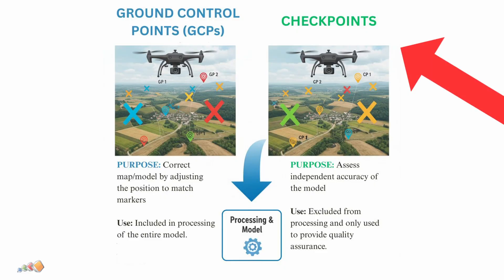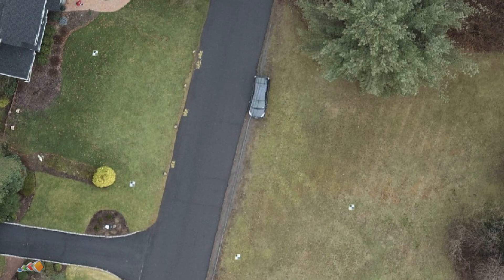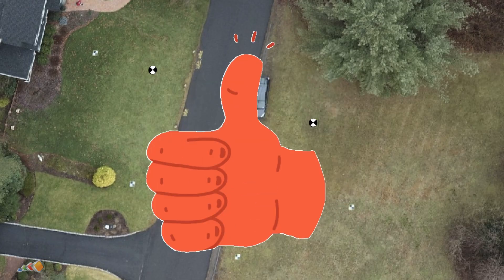Checkpoints, on the other hand, are not used in processing. They are extra points that you measure on site, just like GCPs, but you only use them for verification. Since they are not used to adjust the map, you can be sure that if they're still in the correct location after the map is processed, then you have good results. Now let's go through the process of setting up and processing your map with checkpoints step by step.